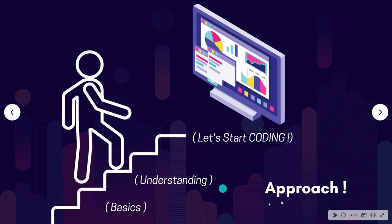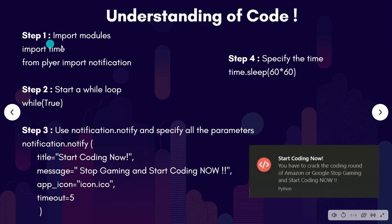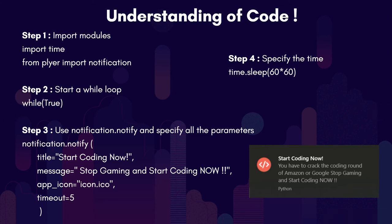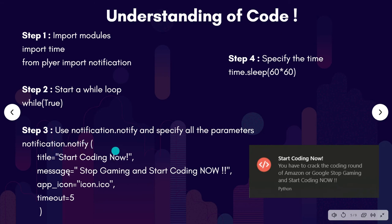Let's see the approach now. First we will import time and the notification class from the Plyer module. Then we will run a while loop because we want our application to run in the background for infinite time. Then we will call the notify method and set all the necessary parameters — title equals to 'Start Coding Now', and message equals to 'Stop gaming and start coding now'. I'm showing a short message here because of space constraint.